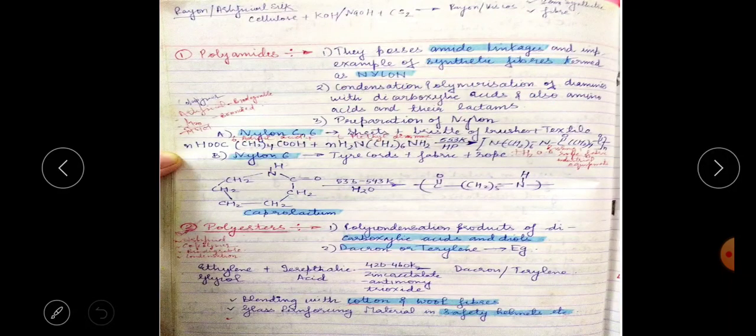Rayon is very important — it is artificial silk. It is made from cellulose using CS2 and NaOH. The reaction to remember is: cellulose + CS2 + NaOH → Rayon (artificial silk).